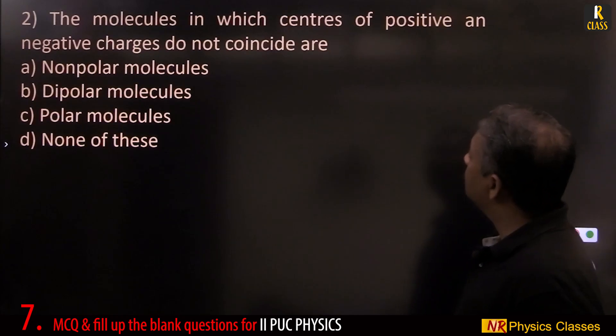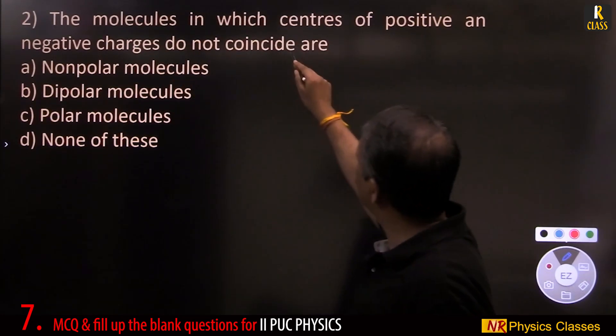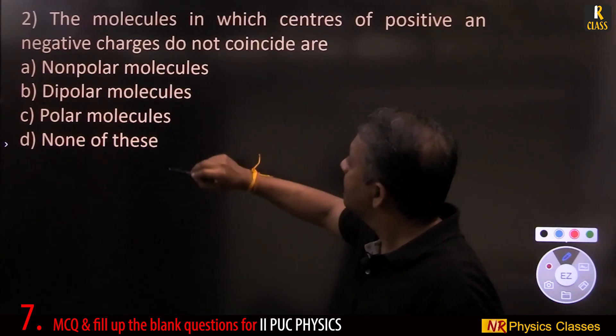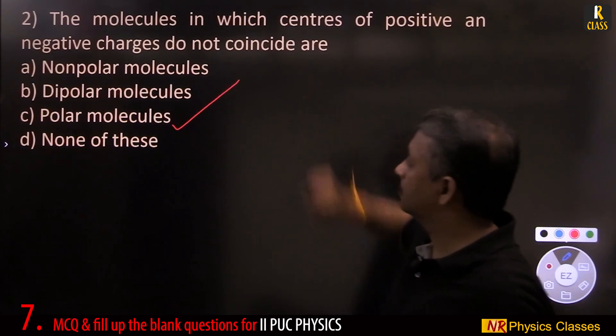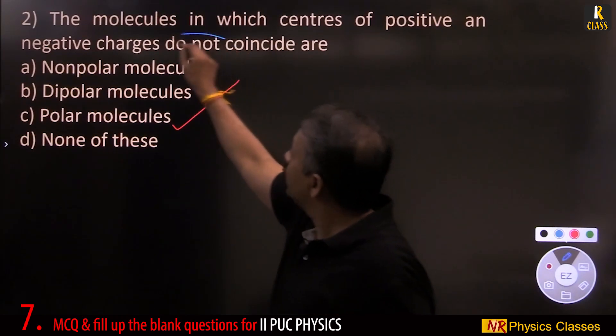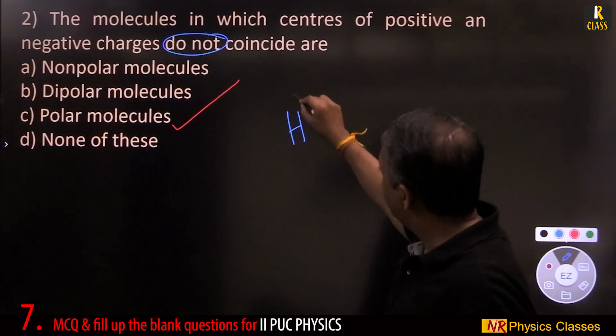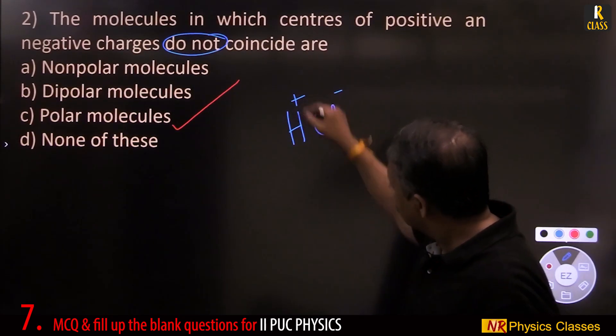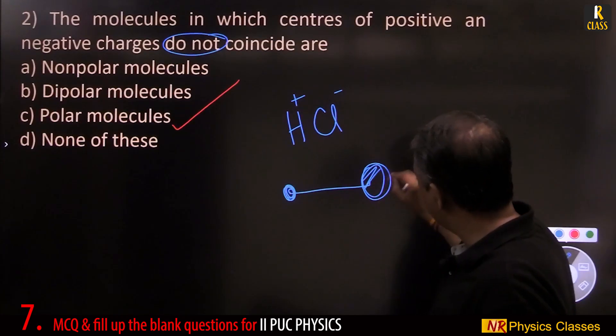The molecules in which centers of positive and negative charges do not coincide are polar molecules. For example, HCl. If this is H plus and this is Cl minus,